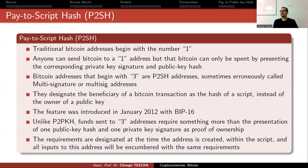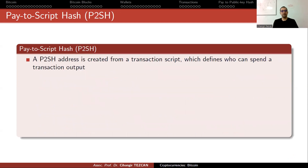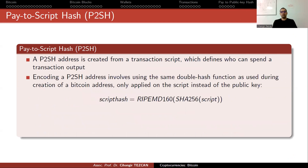You have to provide the script also when you try to request the funding. A pay-to-script hash address is created from a transaction script, which defines who can spend the transaction output. Encoding a pay-to-script hash address involves using the same double hash function as used during the creation of a Bitcoin address, only applied on the script instead of the public key.